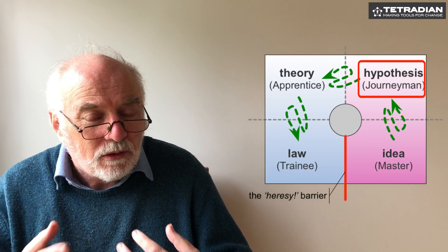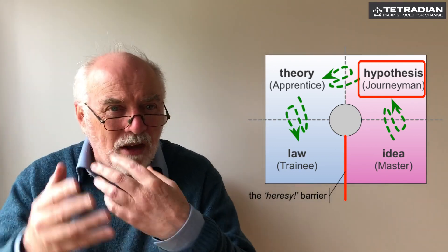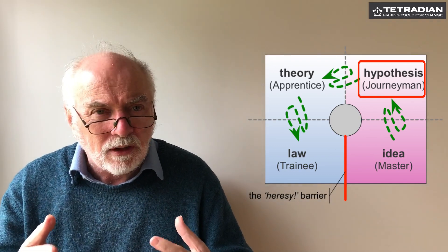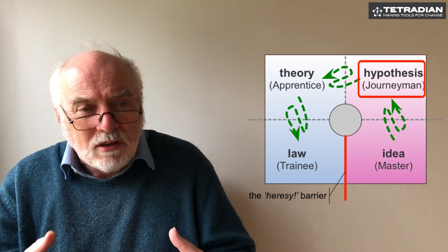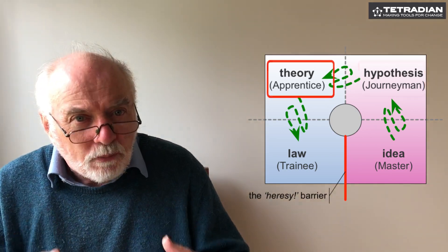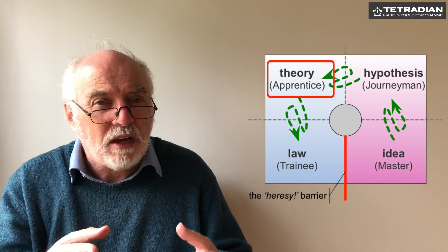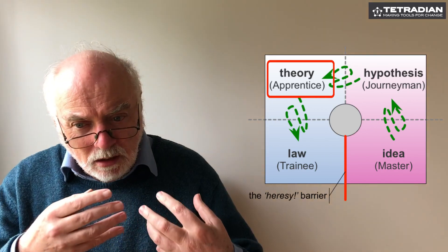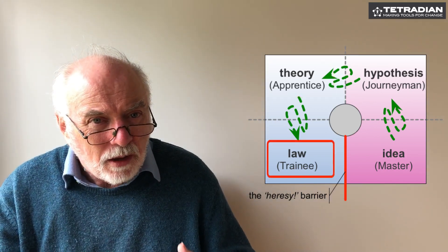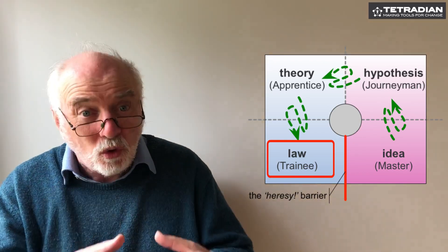In science, the journeyman is developing hypotheses, dealing with working out ideas but not actually there at the front of action. The apprentice is still working on the theory part and the trainee is working only on rules, on law.